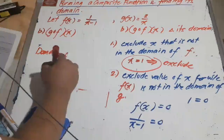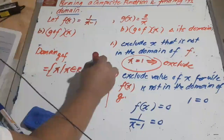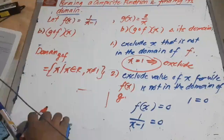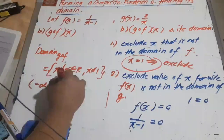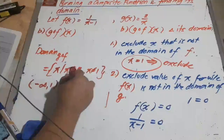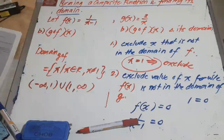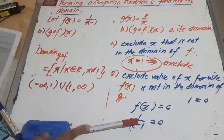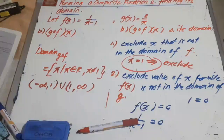Therefore, the domain of g circle f of x is all reals except x equals 1. In interval notation, that is from negative infinity to 1, union 1 to positive infinity. That is how to form and determine the composite function and its equivalent domain. As you can see, f circle g is not equal to g circle f. That is my example on composite functions. Thank you.